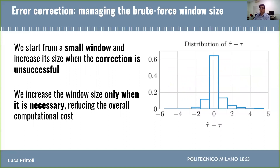Another important issue of our correction procedure is the brute force window size. As I said before, the detection might be inaccurate, meaning that hat tau is not always equal to tau. That's why we consider a window instead of a single index hat tau. Of course, a large window would allow us to correct more errors, but the computational cost would increase exponentially with the window size. For this reason, we developed a greedy strategy: we start from a small window, which is computationally cheap and also sufficient to correct the vast majority of errors, as we can see in this histogram from an example attack. We increase the window size only in the rare cases in which the correction is not successful, as in these rare cases. By doing so, we reduce the overall computational cost of the strengthened attack while maintaining the same correction power.